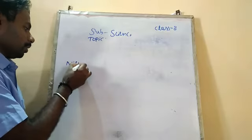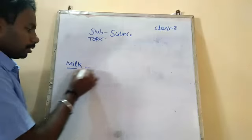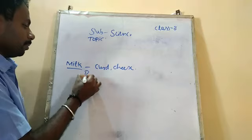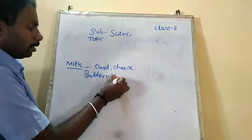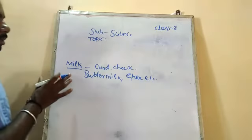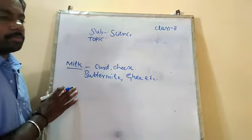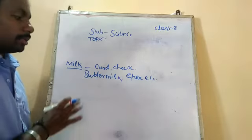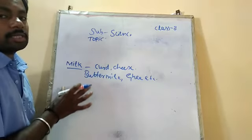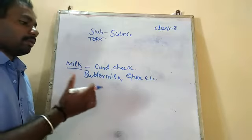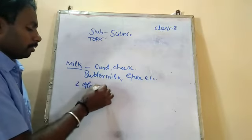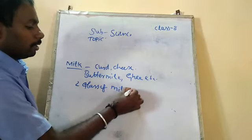From milk you can get so many products — the curd, the cheese, the buttermilk, and ghee. From milk you can prepare so many types of food items. Milk is very good for health. You have to drink at least two glasses of milk every day, because it makes your bones and teeth strong.